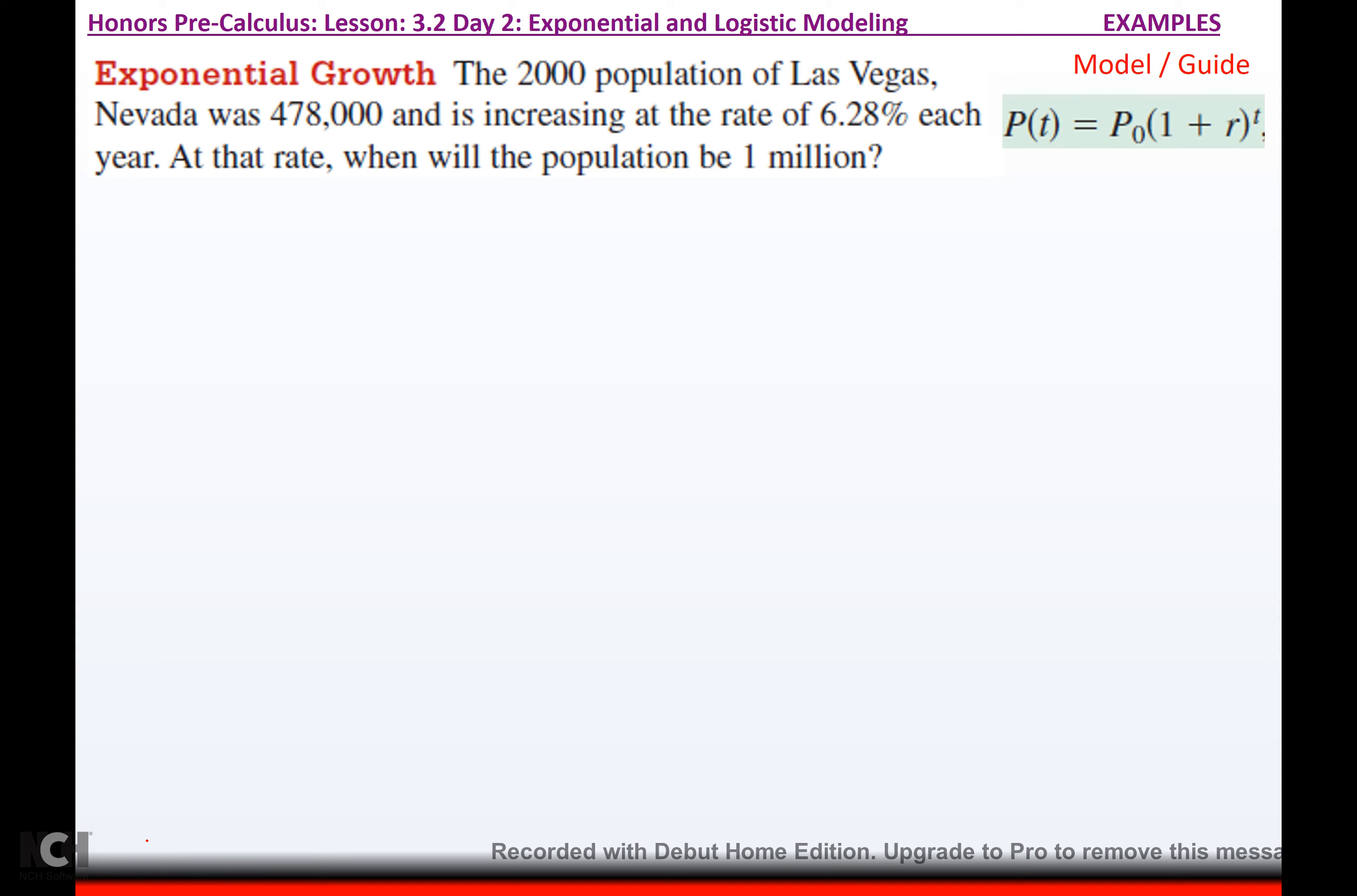It says the 2000 population of Las Vegas, Nevada was 478,000 and is increasing at the rate of 6.28% each year. At that rate, when will the population be a million? Well, what they're trying to figure out is they want the population to be a million. So, the initial population was 478,000 times 1 plus my rate would be 0.0628 to the t.